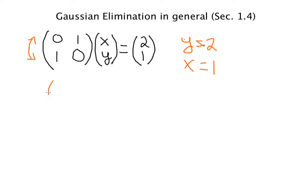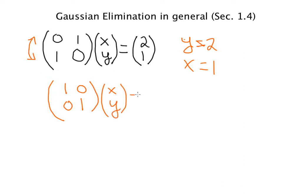If you switch the two rows of this matrix, you get the matrix with entries 1, 0, 0, 1. You leave x and y, and you switch the two rows of the right-hand side to get 1, 2. And there we are — that's x equals 1 and y equals 2.